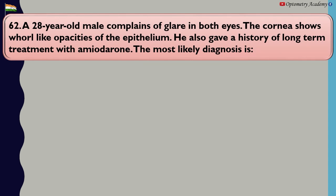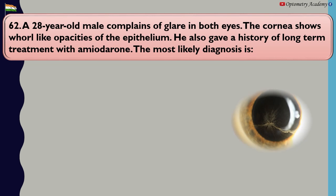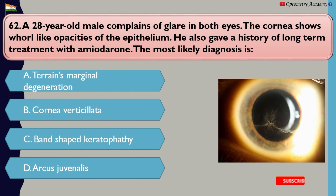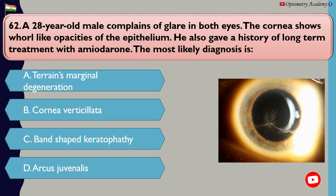A 28-year-old male complains of glare in both eyes. The cornea shows whirl-like opacities of the epithelium. He also gave a history of long-term treatment with amiodarone. The most likely diagnosis is: A. Terrien's marginal degeneration, B. Corneal verticillata, C. Band-shaped keratopathy, D. Arcus juvenilis.